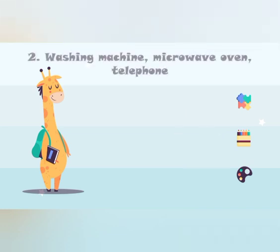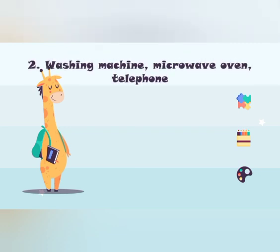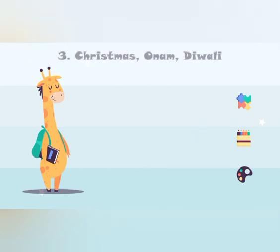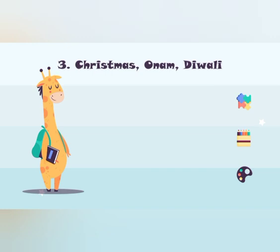Second number: washing machine, microwave oven, telephone — these are all electrical equipment. We will find the electrical equipment from the options. Tongue and paper are not electrical equipment. Computer is our answer. Third: Christmas, Diwali — these are festivals. We will find a festival from the options. Dashera is a festival. Peanut and snail are not festivals. So our answer is Dashera.